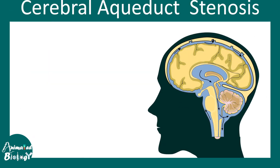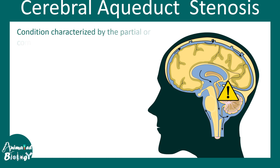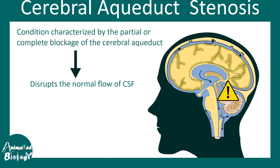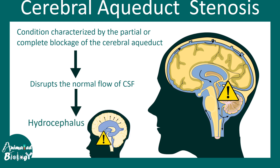One such example is cerebral aqueduct stenosis. In this case, the cerebral aqueduct — which is the connection between the third and the fourth ventricle — is blocked. That means CSF cannot circulate freely through these ventricles, leading to accumulation of CSF and the production of hydrocephalus. This is one form of obstructive hydrocephalus.